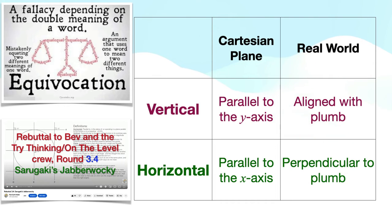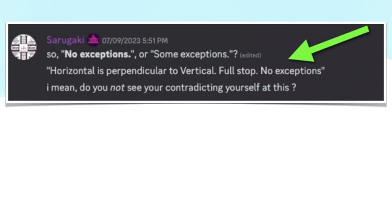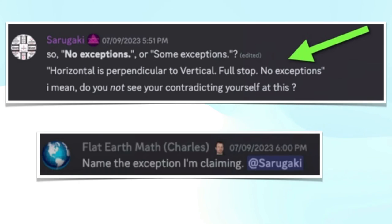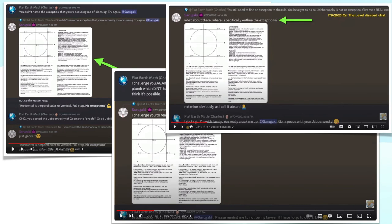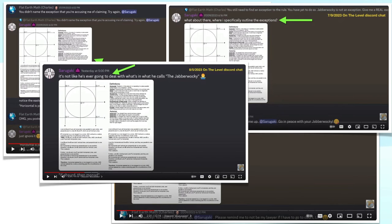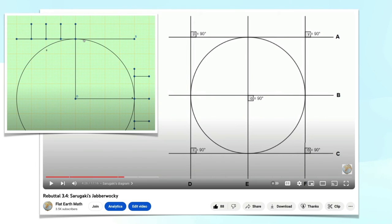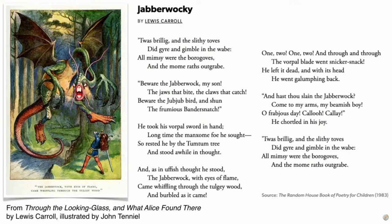As poor Saragaki found out when he unwittingly created his own Jabberwocky. Several months ago, Saragaki kept telling me that there was some sort of contradiction or exception to the statement that vertical is aligned with plumb and horizontal is perpendicular to vertical, with no exceptions. I asked him to name the exception, but all he could do was post again and again his proofs, not far different from what Brian's logic posted. Because he has no experience writing actual geometric proofs and is very unskilled at logic, his proofs ended up being just as absurd as Lewis Carroll's nonsense poem, Jabberwocky.